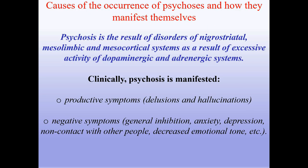Causes of psychosis: it is the result of disorders of the nigrostriatal, mesolimbic, and mesocortical systems, due to excessive activity of dopaminergic and adrenergic systems. Clinically, psychosis manifests as productive symptoms — delusions and hallucinations — and negative symptoms including general inhibition, anxiety, depression, non-contact with other people, decreased emotional tone, etc.